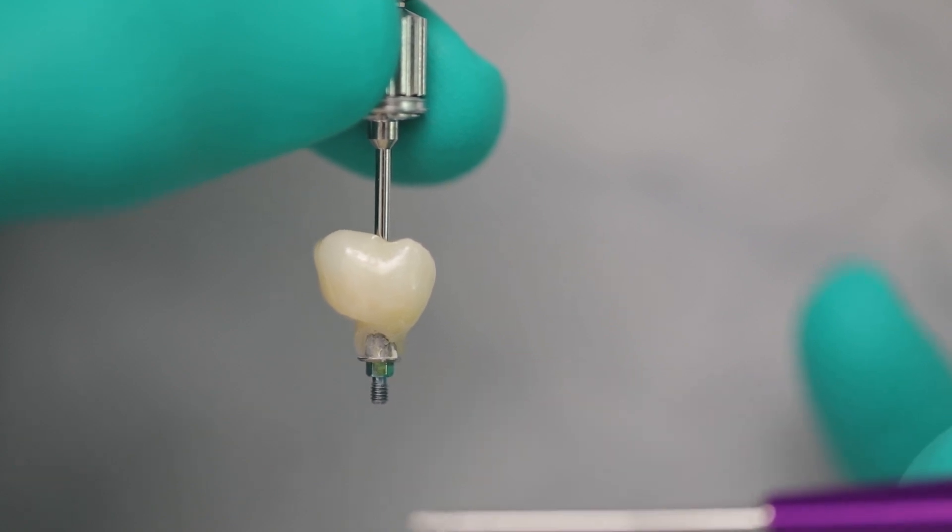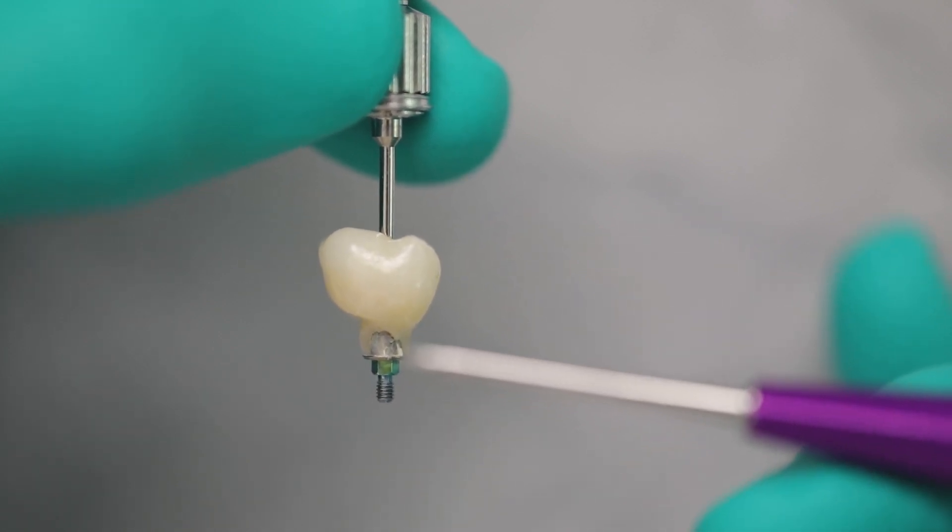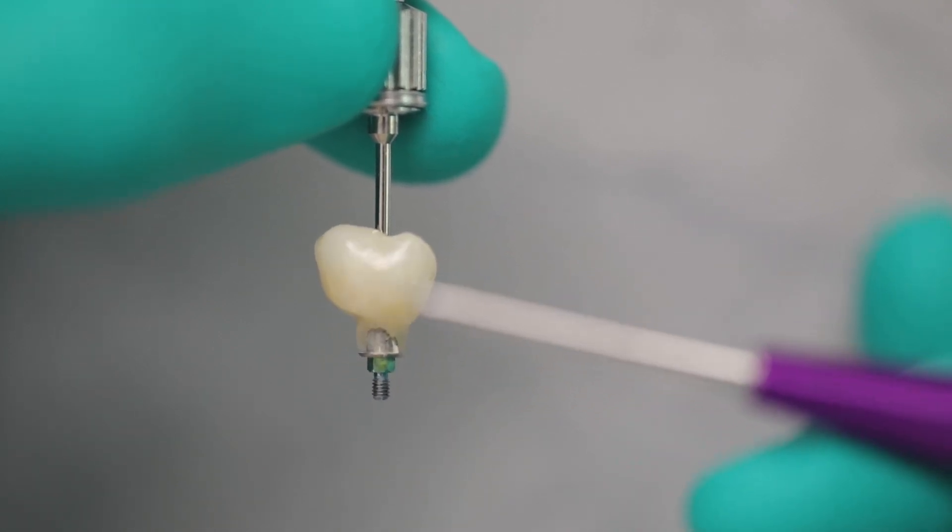It wants to bend this down. So imagine if this was like a diving board and you were standing out here jumping up and down on this tip, this board would want to bend. So as it bends, it puts a lot of stress here at the interface between the prosthesis and the stock abutment. And what happened here is it broke.